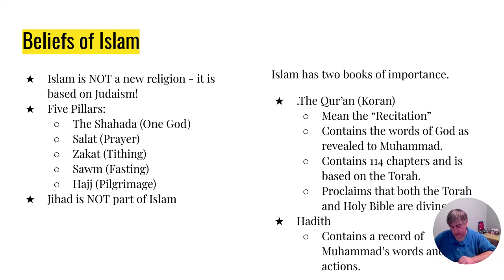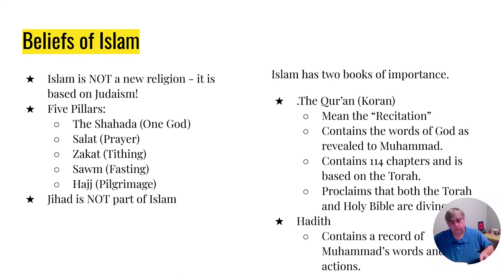Prayer, or Salat: a devout Muslim is supposed to pray five times a day toward Mecca — early morning, mid-morning, mid-afternoon, late afternoon, and nighttime before bed. There's also tithing, or Zakat. Zakat is a tax that all Muslims must pay; it's seen as a loan to Allah that will be repaid in the afterlife. It's very similar to how in a Christian church, the plate is passed and money is put in during certain periods of the service.